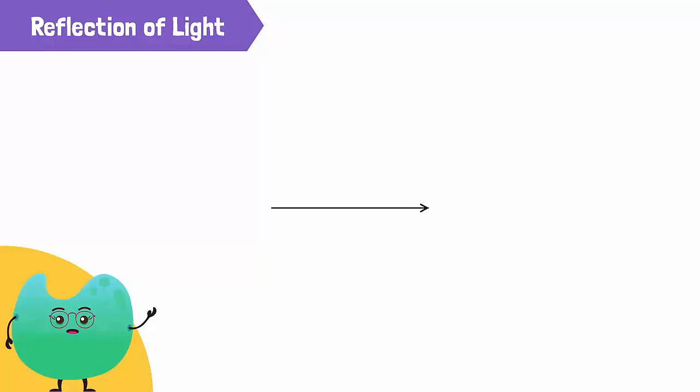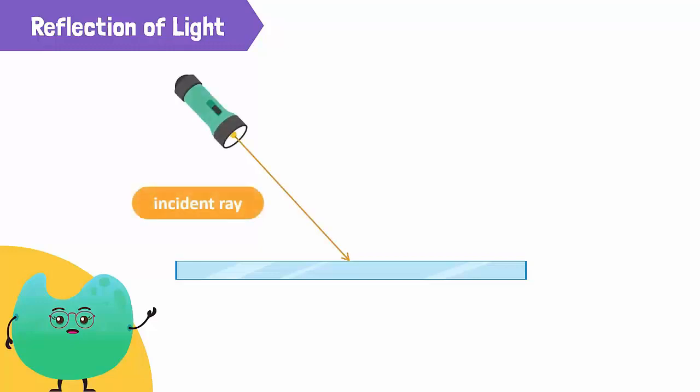Let's use an arrow to represent a ray of light. The ray of light that falls onto the plane or the surface of the mirror is called the incident ray. In our case, the ray of light coming from the torch is the incident ray. The ray of light that travels away from the mirror is called the reflected ray.